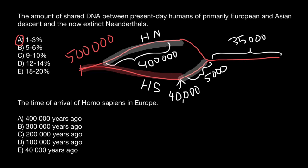Then, 40,000 years ago, Homo sapiens came to Europe and our species interbred. This led to Homo Neanderthals being assimilated into the Homo sapiens genome, because Homo sapiens outnumbered Homo Neanderthals. Neanderthal genes can mostly be found in modern Europeans and Asians, but not in Africans, unless there has been back-migration from European and Asian areas back to Africa.